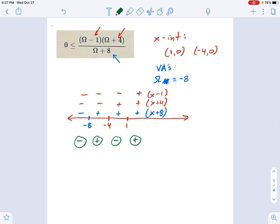And because this function right here is greater than 0, I'm looking at this and this. Here's my solution. It's going to be negative 8 to negative 4. And don't go ahead and write this down yet because we've got to talk about one more thing. 1 to infinity.